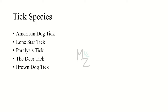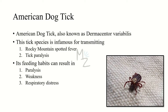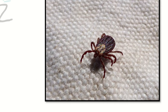There are many tick species discovered across the globe, but we are concerned with those responsible for causing tick paralysis. These include the American dog tick, lone star tick, paralysis tick, deer tick, and brown dog tick. The American dog tick, also known as Dermacentor variabilis, is infamous for transmitting Rocky Mountain spotted fever and tick paralysis. Its feeding habits can result in paralysis, weakness, and respiratory distress. It has a stark brown body with a white spot on the front.